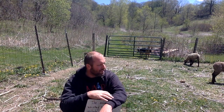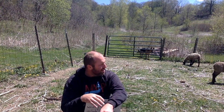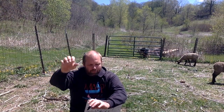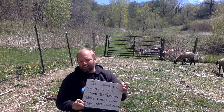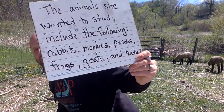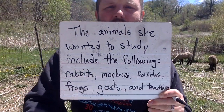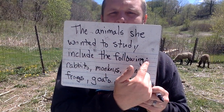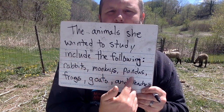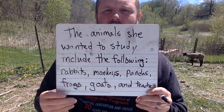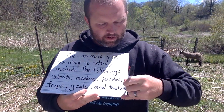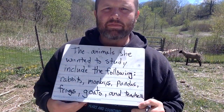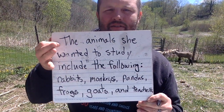You could use words like 'the proceeding,' 'the preceding,' or 'the words below.' It's basically this punctuation mark that tells the reader: after this little part, you're going to see a list of things. Here's the example again closer on the screen — 'The animals she wanted to study include the following:' rabbits, monkeys, pandas, frogs, goats, and teachers. There needs to be a period at the end, and there needs to be a capital letter at the beginning.